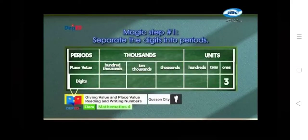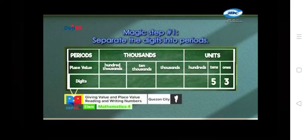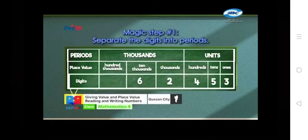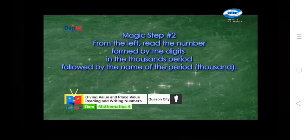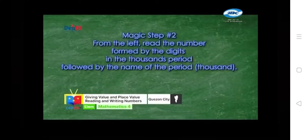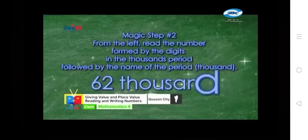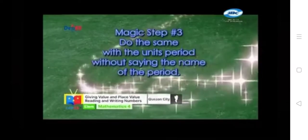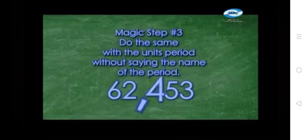The place value of 3 is ones. The place value of 5 is tens. The place value of 4 is hundreds. The place value of 2 is thousands. The place value of 6 is tens. Magic step number 2: from the left, read the number formed by the digits in the thousands period, followed by the name of the period. 62,000. Magic step number 3: do the same with the units period without saying the name of the period. 62,453.